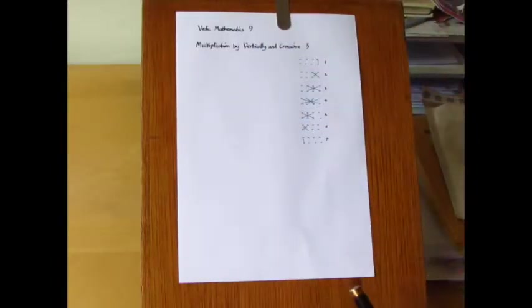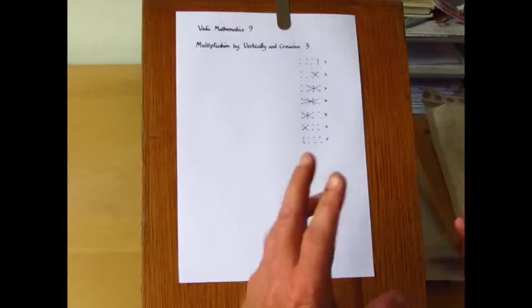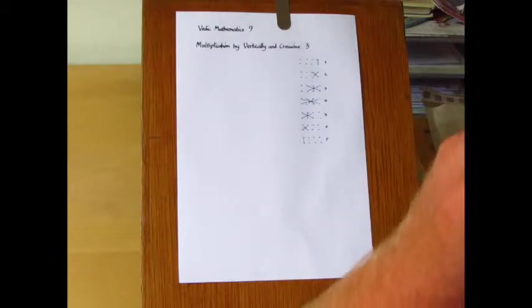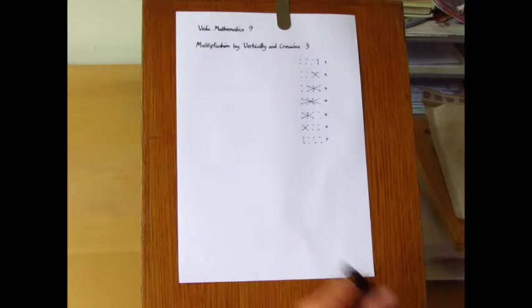Having looked at how to multiply two three-digit numbers together in session eight, here we're going to extend the vertical and crosswise pattern to multiplying numbers together where they have four digits each.